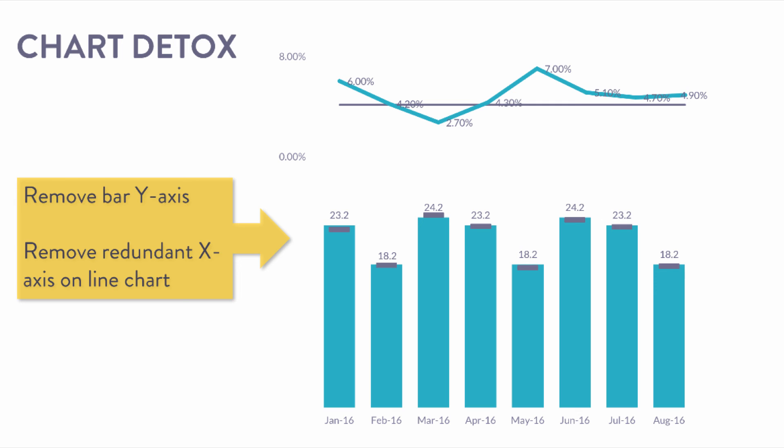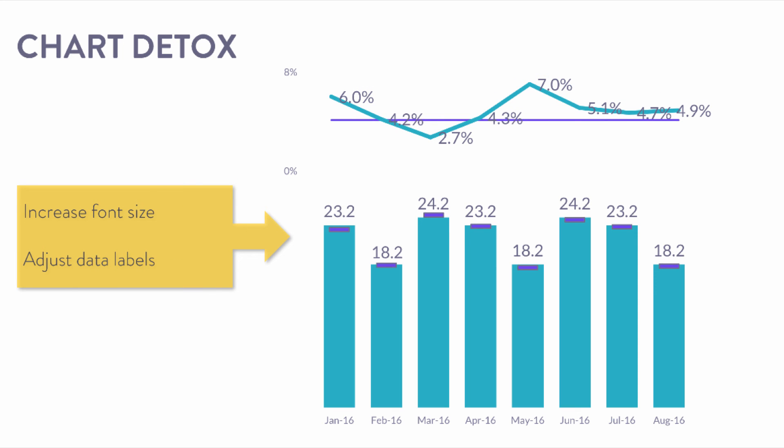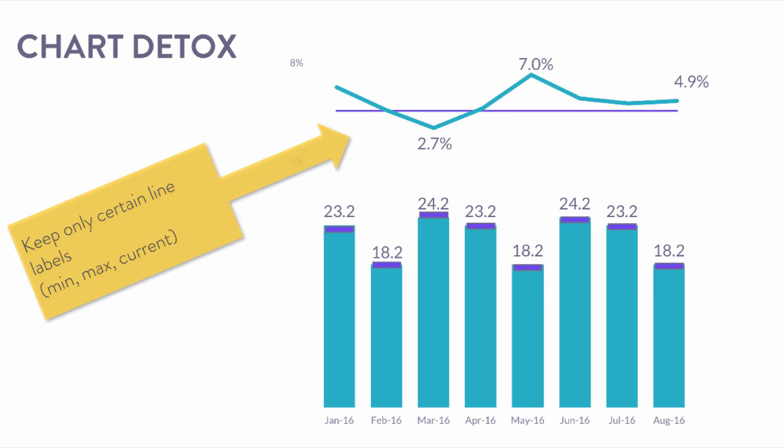I also removed the x-axis months on the line chart because it's redundant — I've positioned those line points exactly above the corresponding bars below, so you don't need to repeat the months. The next thing is to increase the font size so it's more readable in a live presentation. I also adjusted some data labels on the line chart that were overlapping. For the line chart, I like to keep only the minimum, the maximum, and the current performance — enough context to understand what's happening.